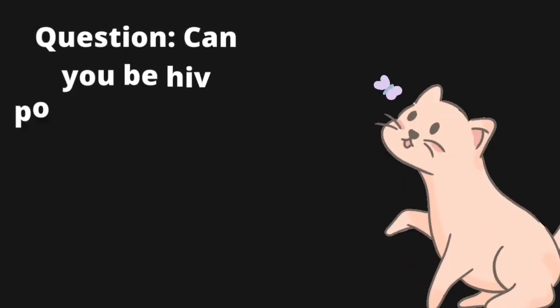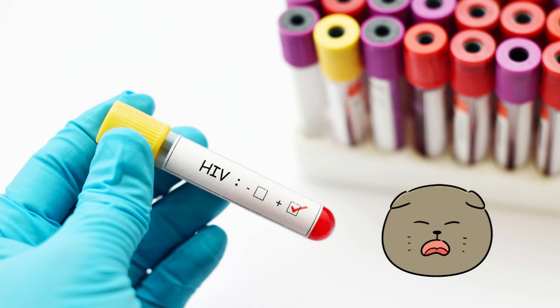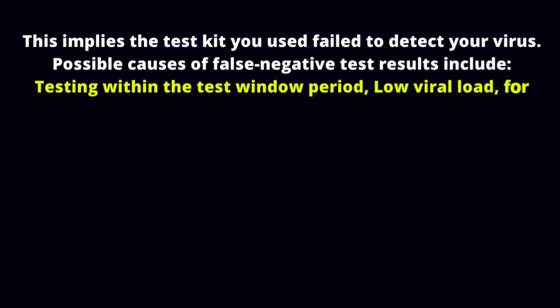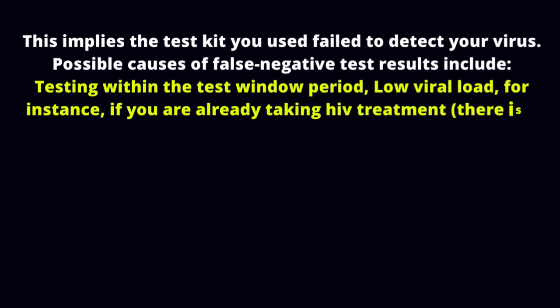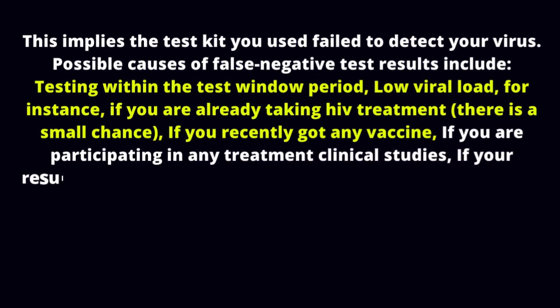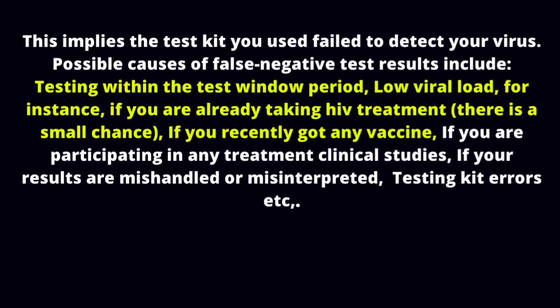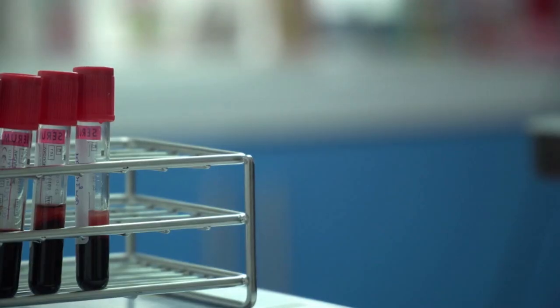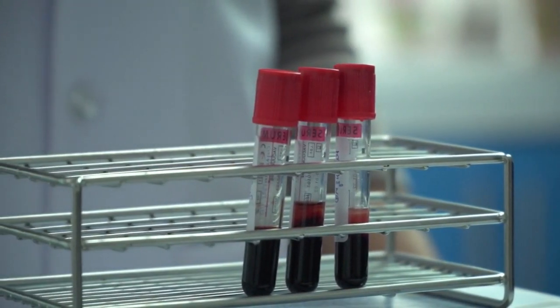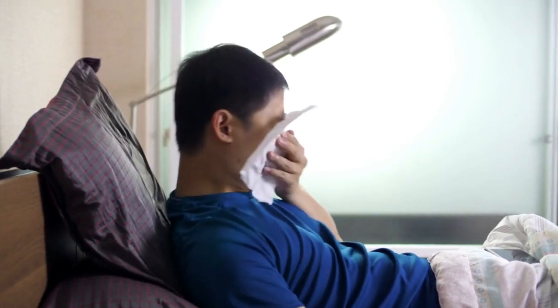Question: Can you be HIV positive and test negative? Yes — we call this a false negative test result. This means the test kit you used failed to detect your virus. Possible causes of false negative results include: testing within the window period, low viral load, being on HIV treatment, recently receiving a vaccine, participating in treatment clinical studies, mishandled or misinterpreted results, and testing kit errors. If you really think you could be infected, test at least more than two times, four weeks apart. Do not use symptoms to confirm an HIV diagnosis.